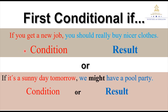We have two sentences. Tenemos dos oraciones. Number one: if you get a new job, you should really buy nicer clothes. Como podemos ver, en la primera parte de la oración, usamos 'if' para hablar de la condición. Y en la segunda parte, usamos 'should' para hablar de un posible resultado. Sentence number two: if it's a sunny day tomorrow, we might have a pool party. Nuevamente, en la primera parte usamos 'if' para hablar de una condición, y en la segunda parte usamos 'might' para hablar de un posible resultado.